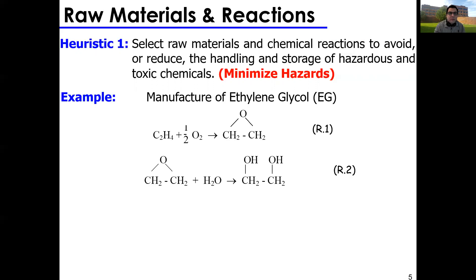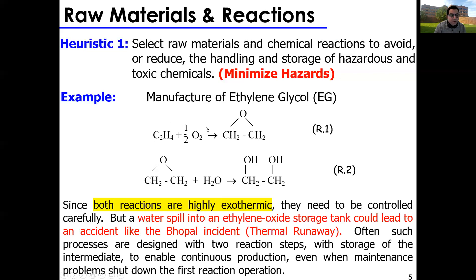For example, in the manufacture of ethylene glycol: ethylene reacts with oxygen to get ethylene oxide, then ethylene oxide plus water gives ethylene glycol. The issue is both reactions are highly exothermic. You're breaking a C–H bond and creating an O–C bond. Both reactions must be controlled carefully. However, a water spill into an ethylene oxide storage tank would lead to an accident similar to the Bhopal incident.